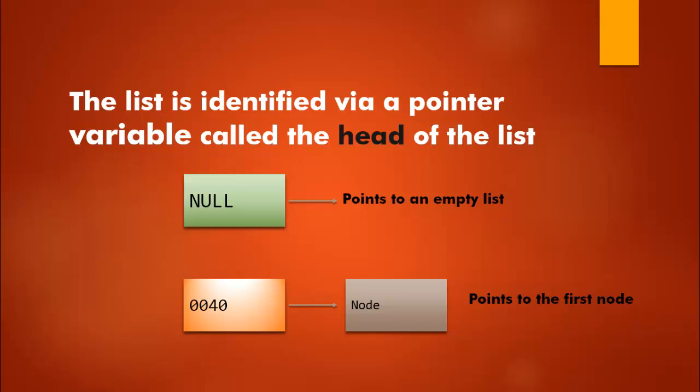The head or root variable is critical to your program. If you lose your head, you've lost your list, because there is no other way to go back and find it in memory. So you have to be very cognizant when programming the linked list of what's happening with the head. If there's a possibility it can be overwritten or deleted, you want to be very careful to protect that variable.